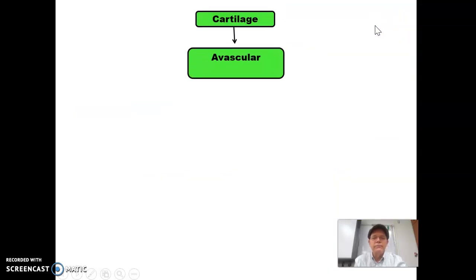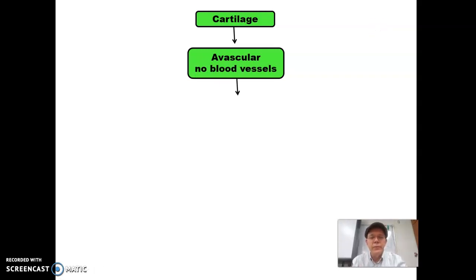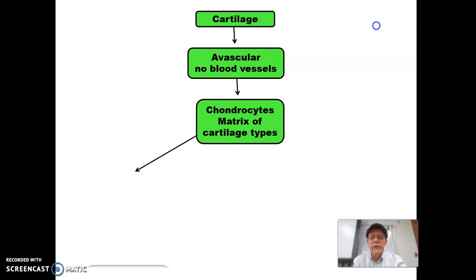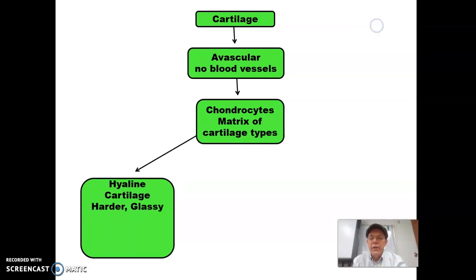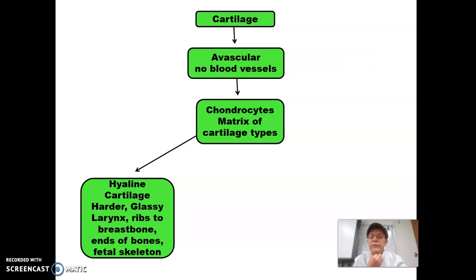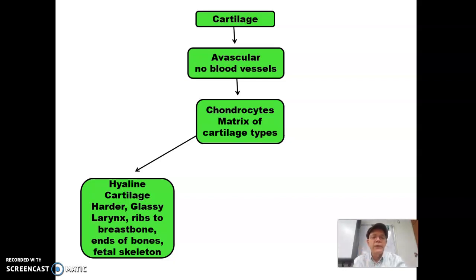Cartilage — we're going to talk about it more specifically. Avascular means no blood vessels, so it does not heal. Chondrocytes are the cells that make cartilage. Hyaline cartilage is hard, very almost glassy, very rigid — feels almost like bone from the outside. You find it in your larynx, your esophagus, where your ribs attach to your sternum. The ends of your bones have very smooth, hard layers of cartilage on them, and your fetal skeleton is made of hyaline cartilage before it's replaced by bone.